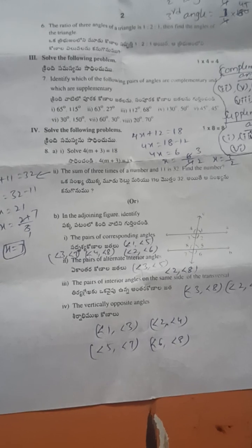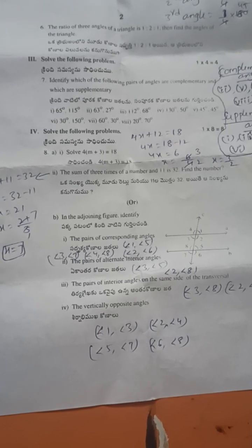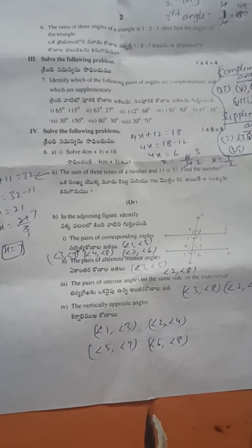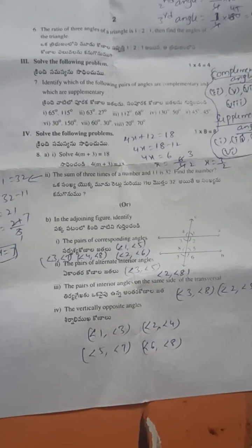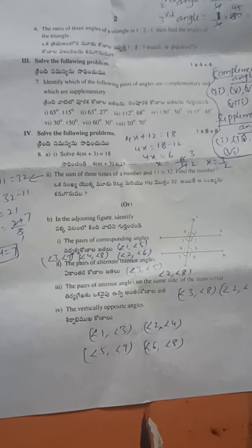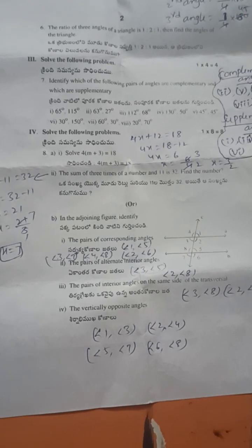The pair of interior angles on the same side of transversal line: 3 and 8, 2 and 5. The vertically opposite angles: 1 and 3, 2 and 4, 5 and 7, 6 and 8. Thank you.